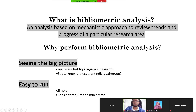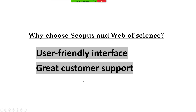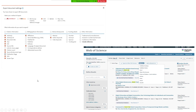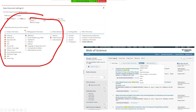More than that, bibliometric analysis is easy to run — simple and does not require too much time. Why choose Scopus and Web of Science? Because these digital databases have a user-friendly interface and great customer support. Both Web of Science and Scopus offer a friendly interface and great customer support, as you can see here.